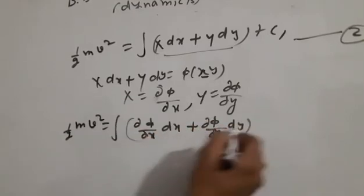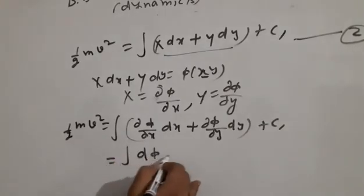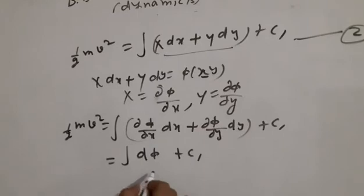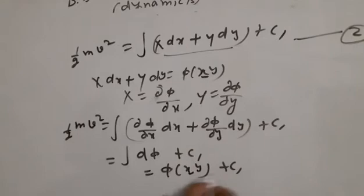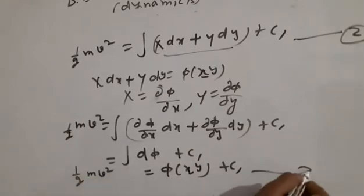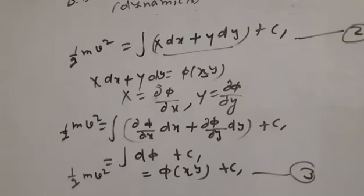Integrating gives us: (1/2)·m·v² = φ(x,y) + C₁. This is equation number 3. Here φ(x,y) is known as the work function, and (1/2)·m·v² gives the kinetic energy of the particle at point P(x,y).